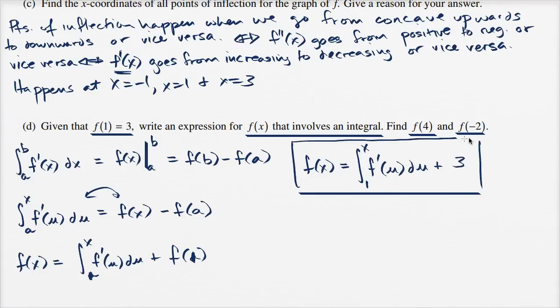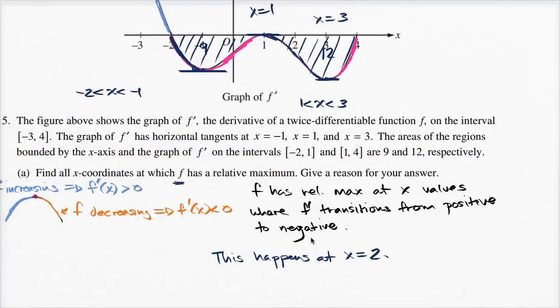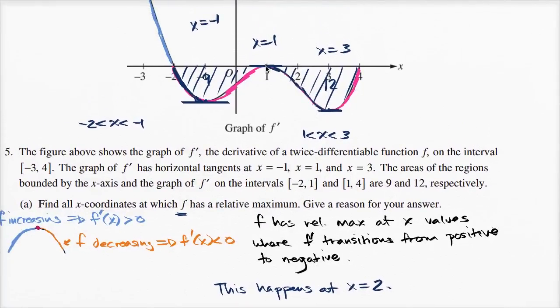Now, let's try to find f of four and f of negative two. f of four is going to be the integral from one to four of f prime of u du plus three. So what is going to be the integral from one to four of f prime of u du? So let's look up here. So the integral from one to four of f prime, that's that curve right over here.